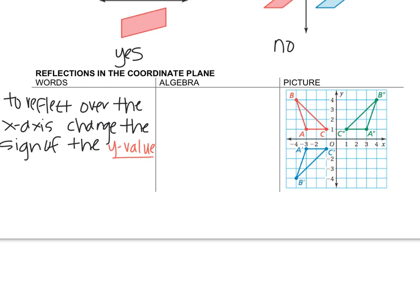To reflect over the x-axis, what we do is we change the sign of the y value. If you look at this red shape compared to this blue shape, point A was at negative 3, 1, and point A prime is at negative 3, negative 1. So all they did was they took the y value, 1, and changed its sign. And that happened for B and C.